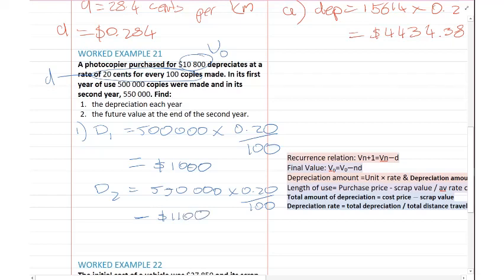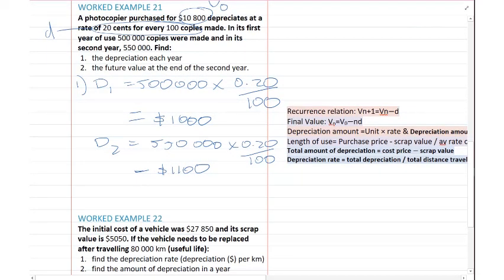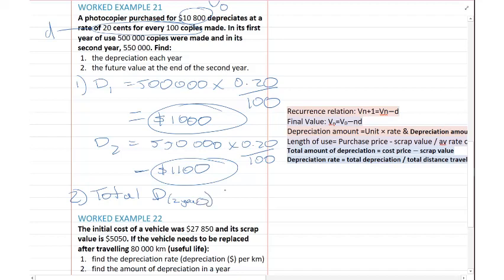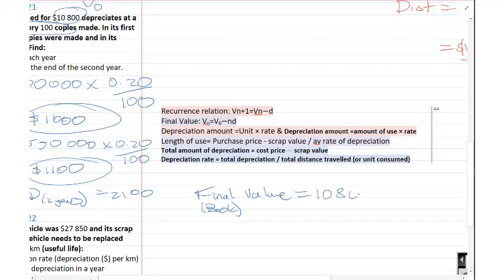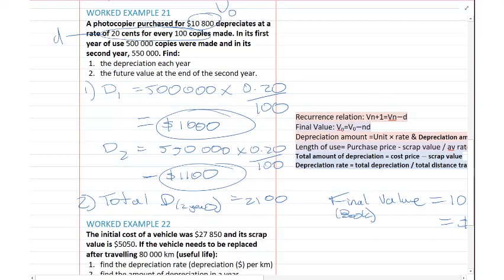So D1 is $1,000 and D2 is $1,100 — those are your two answers for the annual depreciation. For the future value at the end of the second year: total depreciation over two years equals $2,100. The book value equals $10,800 minus $2,100, giving a value of $8,700.